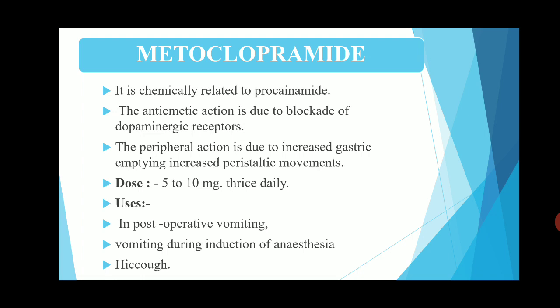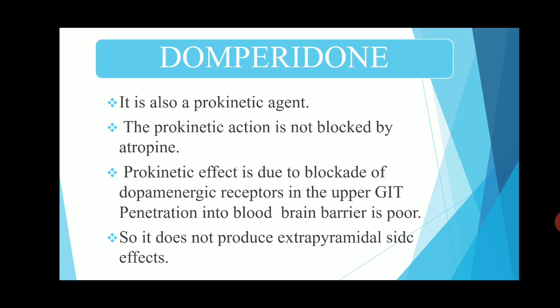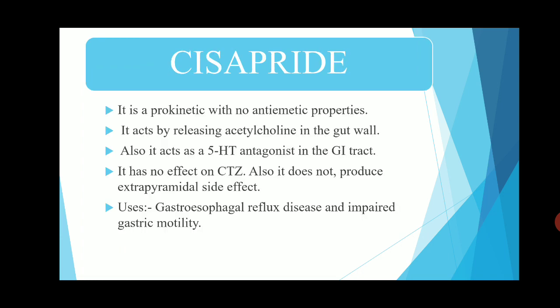The next prokinetic drug is domperidone. It is also a prokinetic agent. The prokinetic action is not blocked by atropine. The prokinetic effect is due to blockage of dopaminergic receptors in the upper GIT. Penetration into the blood-brain barrier is poor, so it does not produce extrapyramidal side effects.